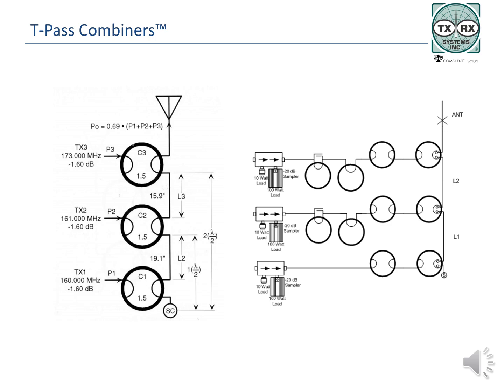These diagrams show two TPAS combiner designs. Systems will differ based on their frequency plan. The combiner on the left uses single TPAS cavities with bandpass loops on the input and TPAS loops on the output of each cavity. The diagram shows the calculations to determine the critical length cables, all based on half-wavelength intervals. The L2 cable length is matched to the transmit 1 frequency, 160 MHz, at half-wavelength, and includes the lengths of the short and the TPAS loop at the output of C1. The signal enters C1 at P1, is filtered by the cavity, and output by the TPAS coupler.